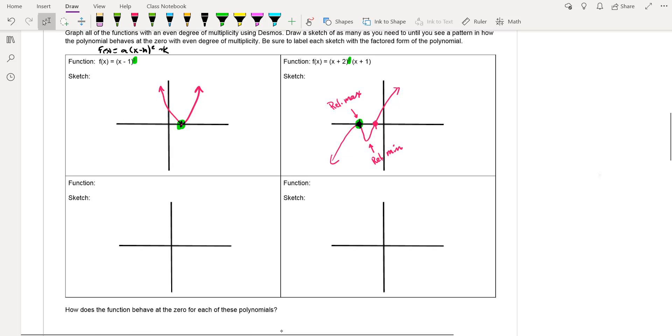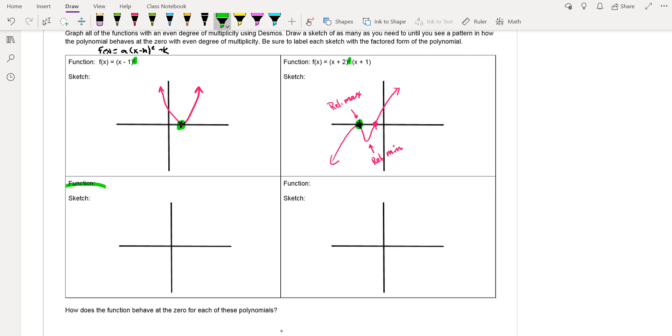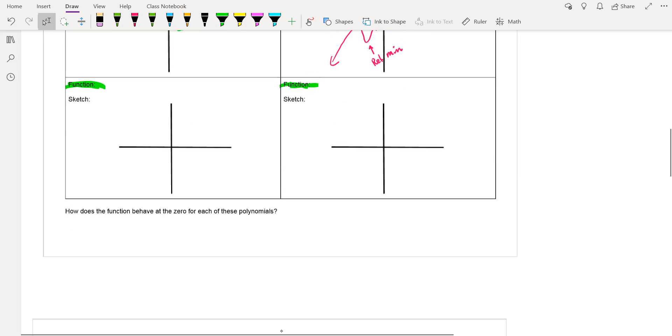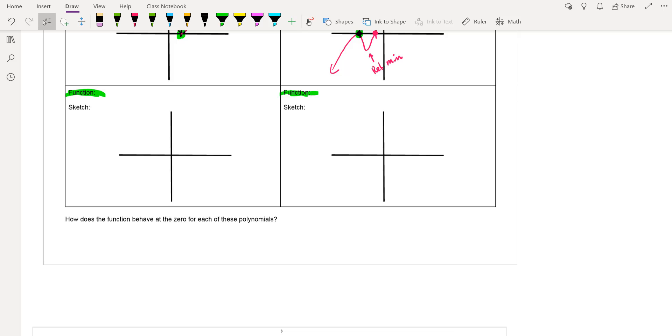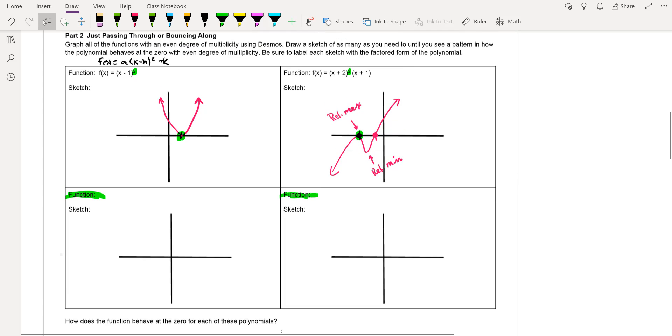And I want you to pause and then pick two other functions, any two other even functions you want from our notes, go ahead and put them into Desmos and sketch them as well. And then answer the question there, how does the function behave at the zero for these polynomials? Does it bounce or does it pass through when you have an even degree for the factor?